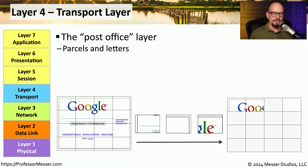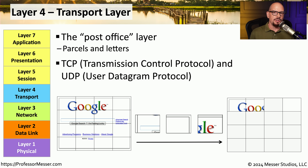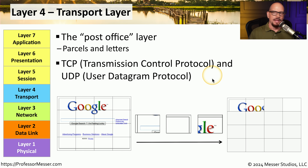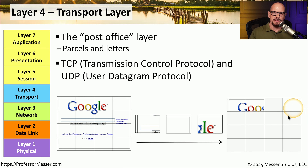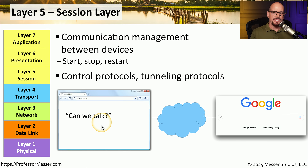Layer 4 is the transport layer. You might also call it the post office layer, because it's responsible for getting information from one side of the network to the other. The protocols commonly operating at layer 4 are TCP — Transmission Control Protocol — and UDP — User Datagram Protocol. These protocols handle getting all information within IP packets from one device to another, often breaking large data into smaller pieces and reassembling them on the other side.